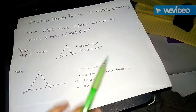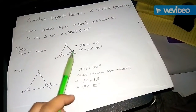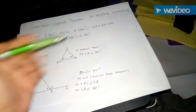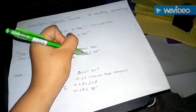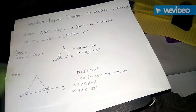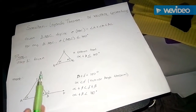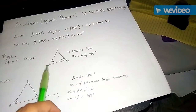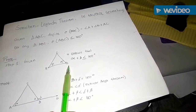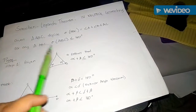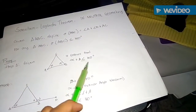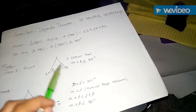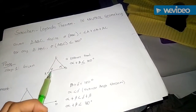With this notation we can state the Saccheri-Legendre theorem as: for any triangle, the angle sum σ(ABC) is less than or equal to 180 degrees. This proof is divided into four steps. Step 1 says: given any triangle ABC, the sum of any two angles is less than or equal to 180 degrees.